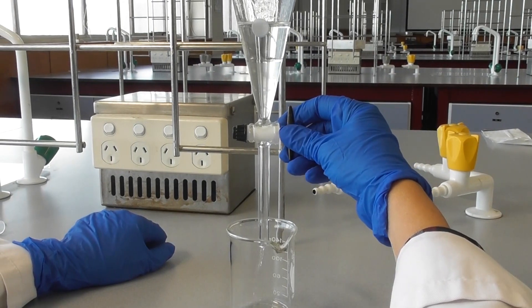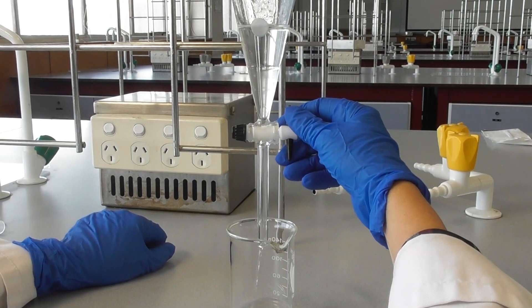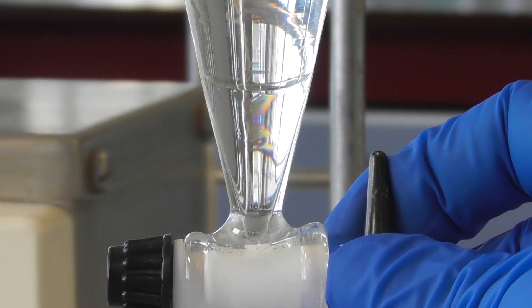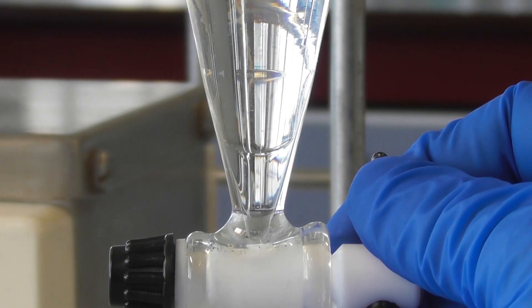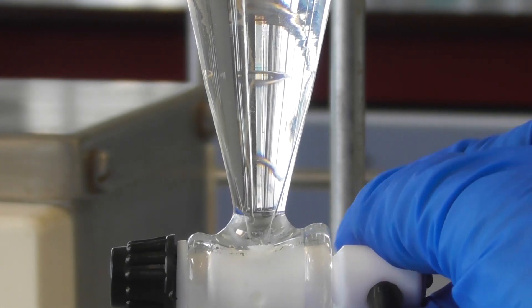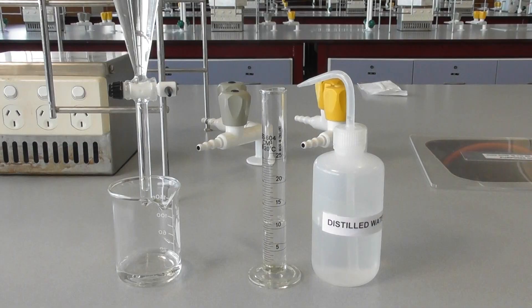Open the tap and drain the bottom layer, keeping a close eye on the boundary between the phases. Begin closing the tap as the boundary approaches it. Best separation occurs when the interface is just above or inside the tap.